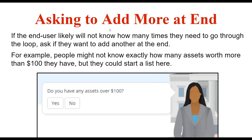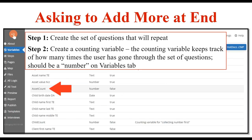Now, asking to add more at the end. If an end user is not likely to know how many times they need to go through the loop, you ask them at the end of the loop if they want to add another. For example, assets over $100 is something an end user might not know off the top of their head how many they have. So let them start making a list one at a time, and then verify that they need to add more at the end. This method has the same beginning steps: you create the set of questions to be repeated. In this case, the two questions are asset name and value as one question, and then "do you want any more" at the end. You also create a counting variable — here it's "assetCount," all one word, both the A and C capitalized — it is a number and not set to hold multiple values.